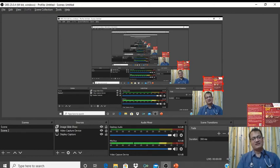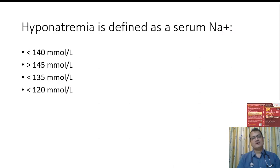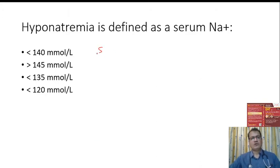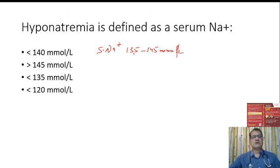Welcome. I'd like to discuss some important questions on the topic of hyponatremia. Hyponatremia is defined as a serum sodium below the normal range. Normal serum sodium is between 135 to 145 millimoles per liter in the plasma, so by definition hyponatremia is serum sodium less than 135 millimoles per liter.